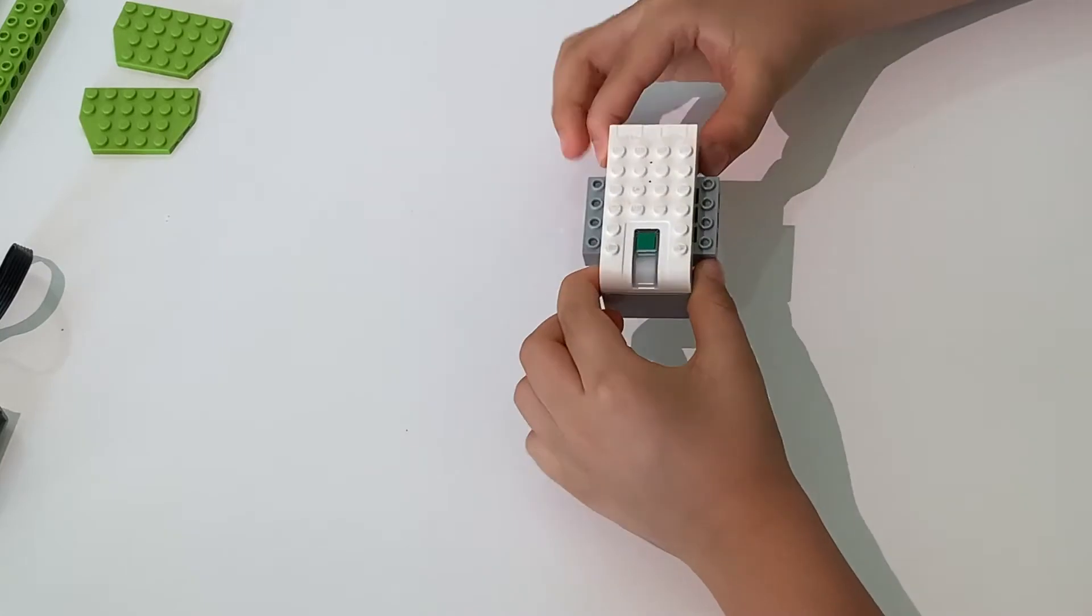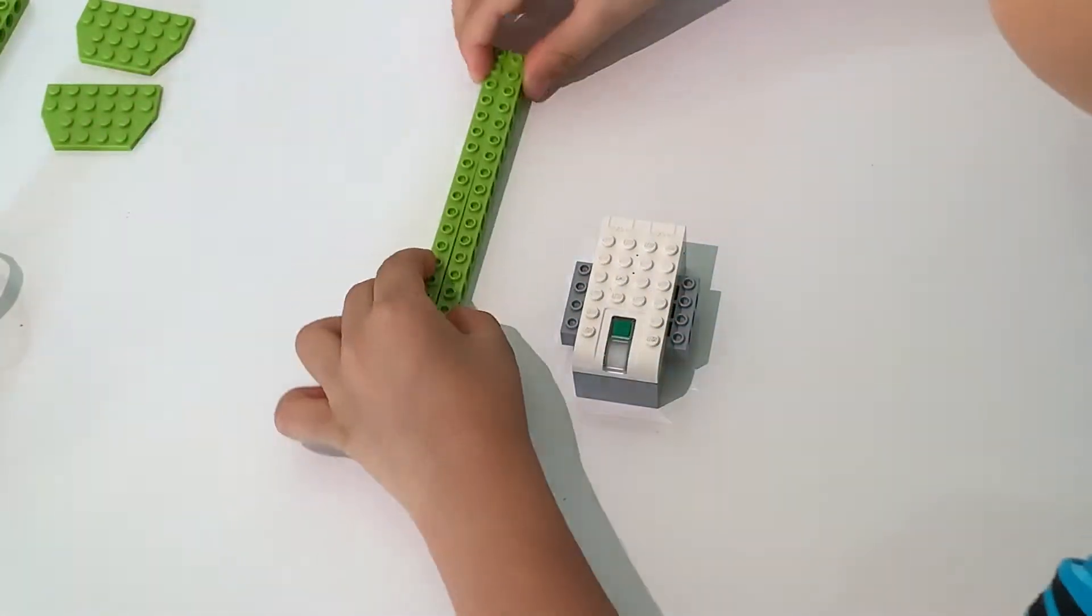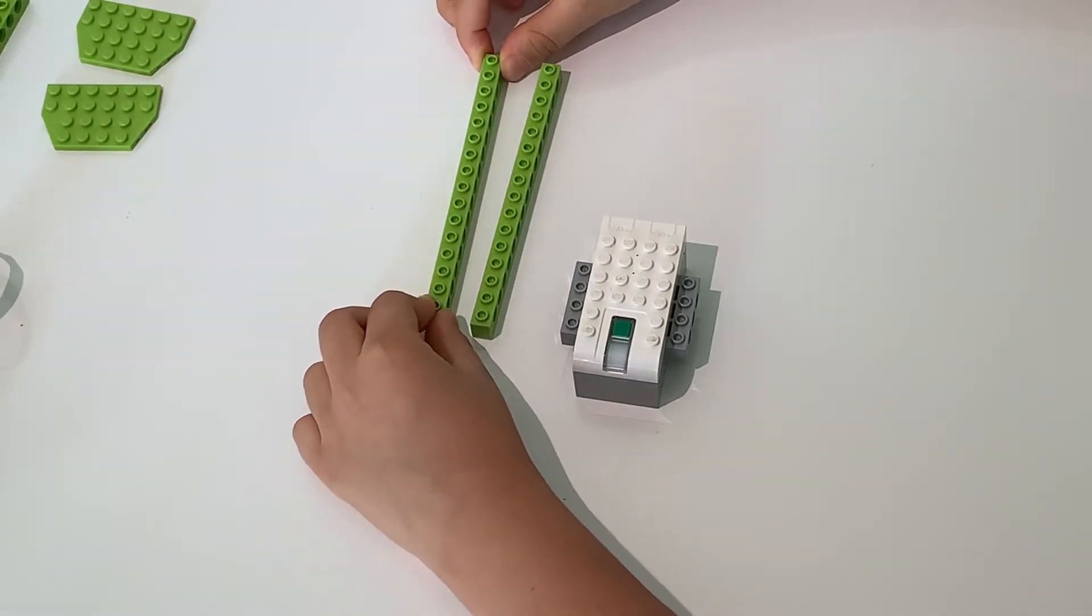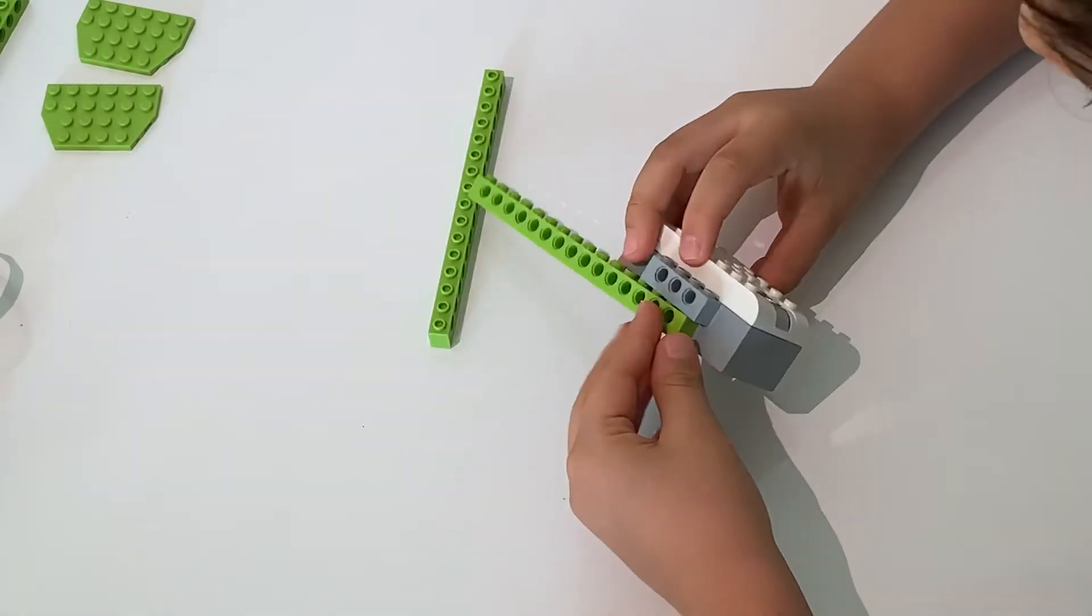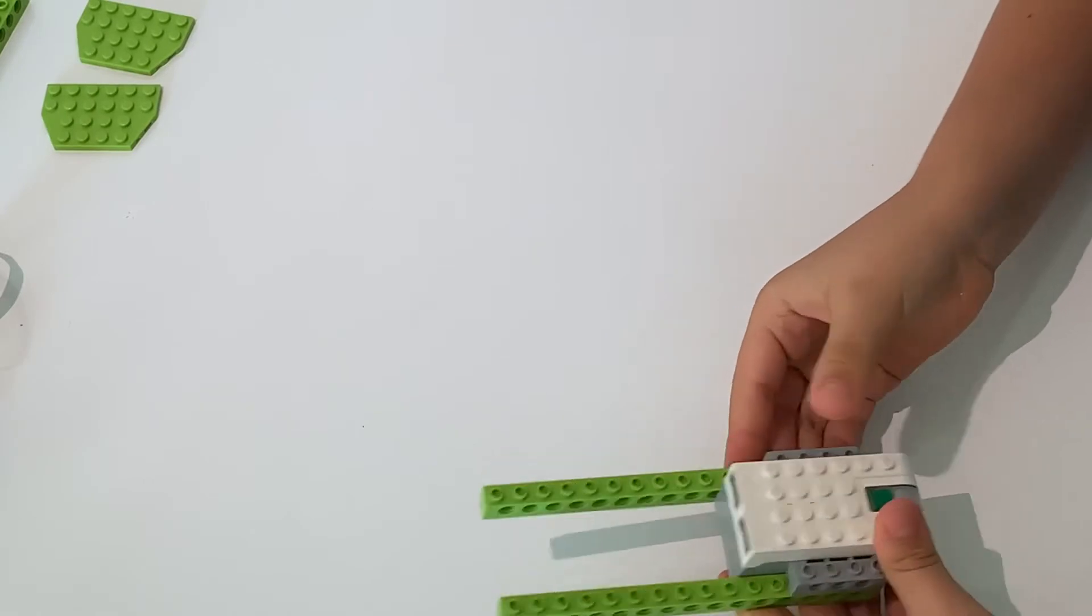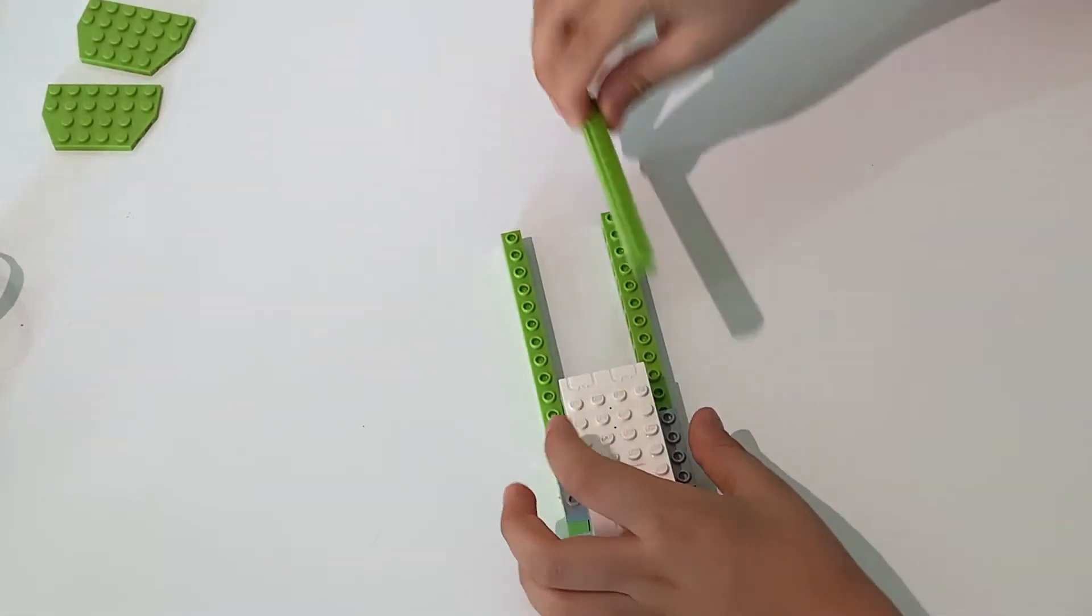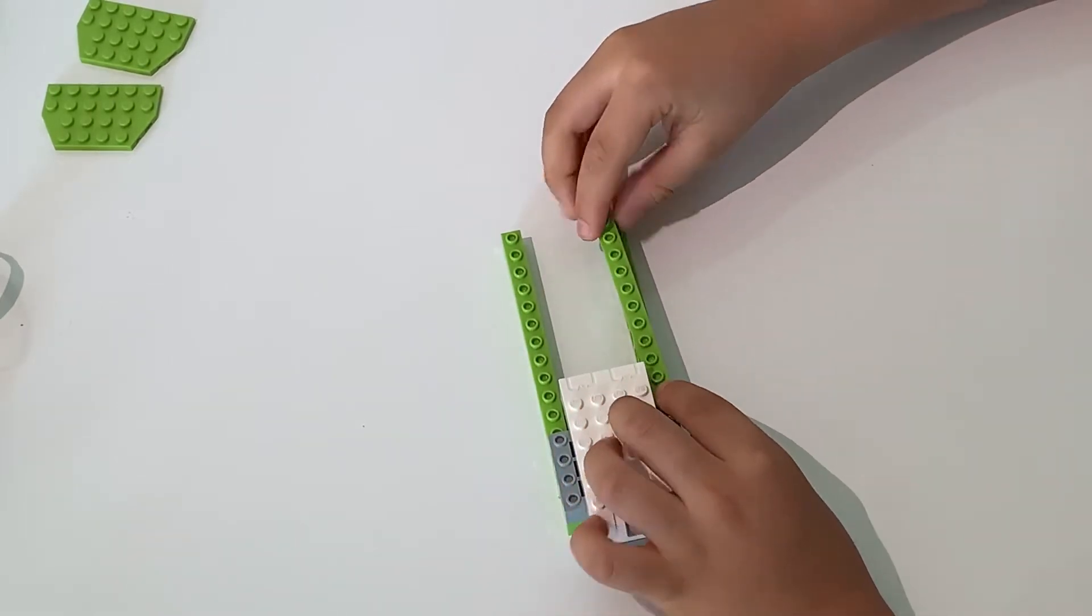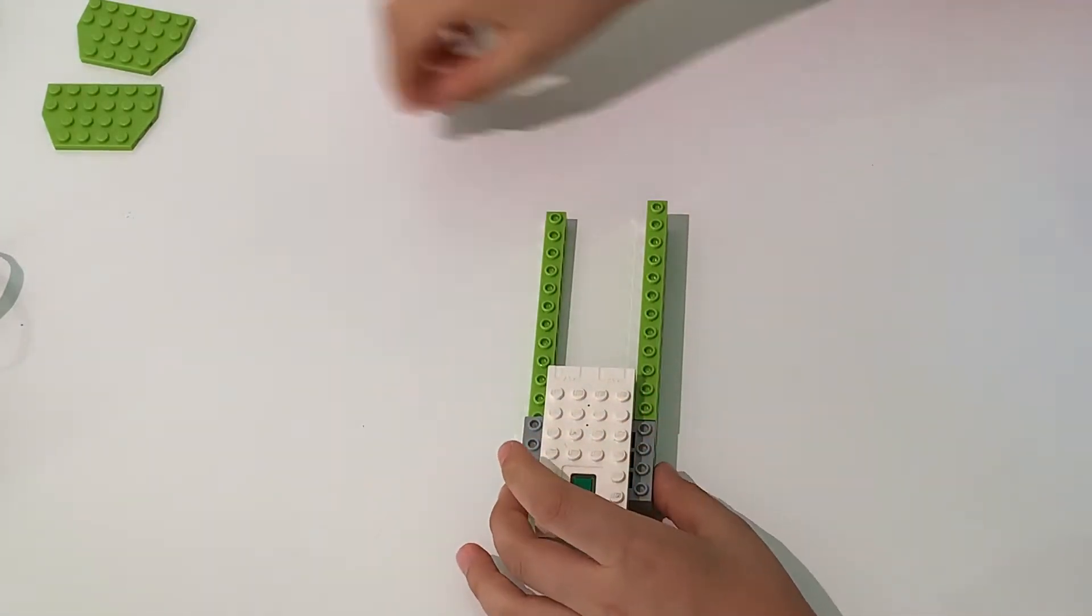First, we'll need the smart hub. And we'll also need two of these green pieces, 16 dots long. We'll grab the smart hub and insert the pieces here and here. Now, we'll get the smaller 12 dot long pieces and place them on top of the 16 dot long pieces.